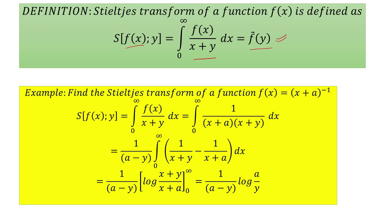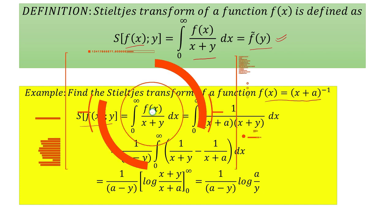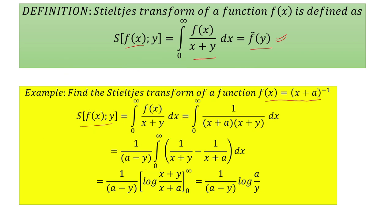Consider this example: suppose f(x) = (x+a)⁻¹ and let us find its Stieltjes transform. By definition it is the integral from 0 to infinity of f(x)/(x+y) dx. After substituting f(x) and using partial fractions, we write the integral as 1/(a−y) times the integral of [1/(x+y) − 1/(x+a)] dx. After integrating and applying limits, the Stieltjes transform is (1/(a−y)) log(a/y).